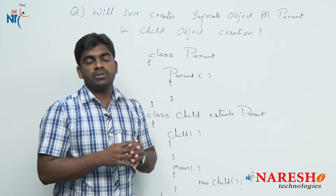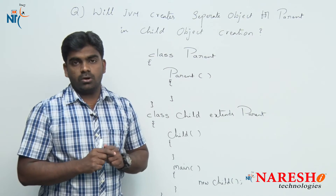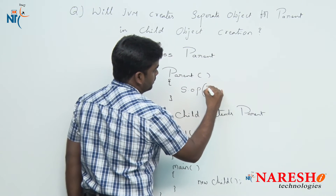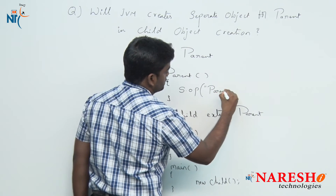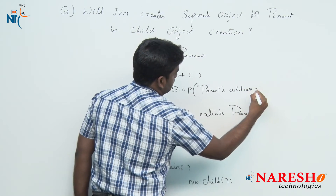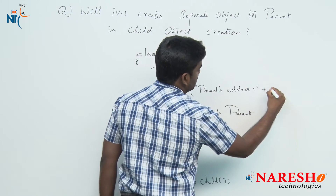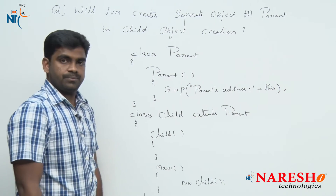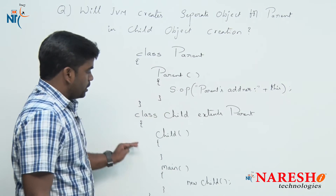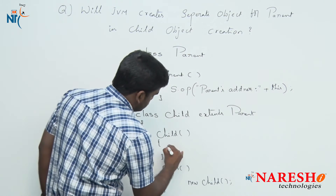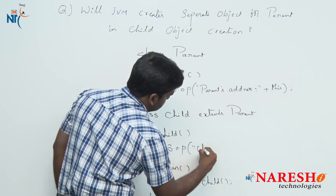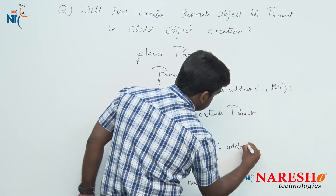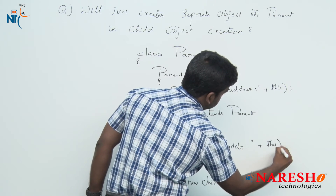Now, if you want to know the object address, just in the parent's non-static area we are printing the parent's address. How can we print in the non-static area? If you want to print the address, the only option you have is 'this'. Then control comes back to the child, and in the child we print using System.out.println — this is the child's address — and we are printing 'this'.